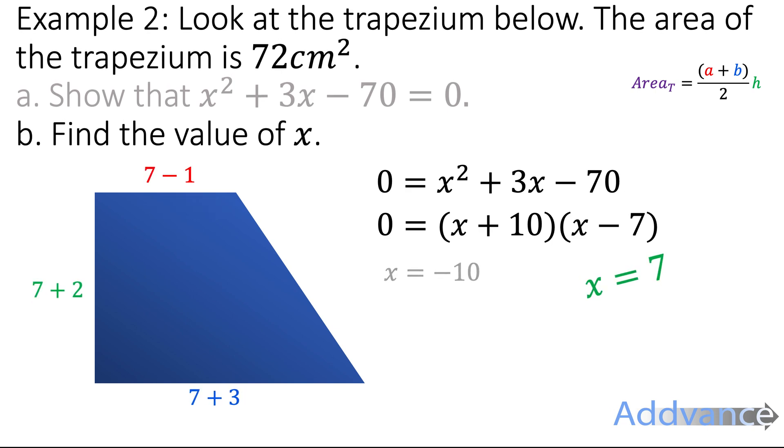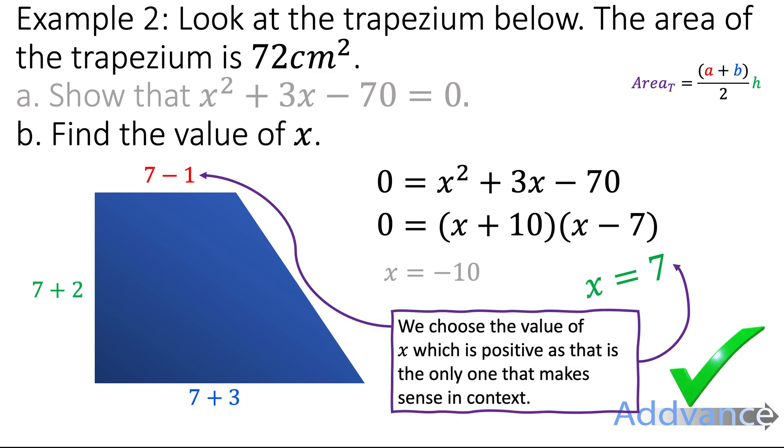Whereas if we chose x = 7, we get the top of the trapezium is 7 - 1, which is 6. And the other lengths make sense as well. And so we choose the sensible answer for x, the one that makes sense in the context of the question. Normally that is the positive value of x. That is question 2 complete, and we know that x is equal to 7.